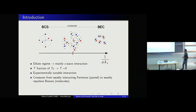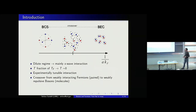The interaction is mainly s-wave and the density fraction is very low. In experiments, they can cool down the systems almost to zero temperature. Experimentally, the interaction can be tuned so all these regimes can be spanned. There is a crossover, as I said, from weakly interacting fermions paired in the BCS state to weakly repulsive bosons between molecules.